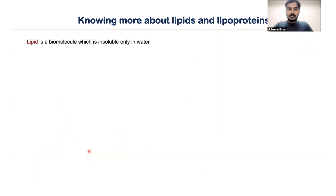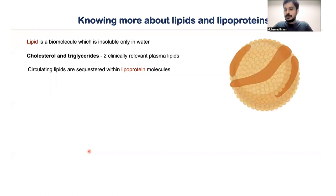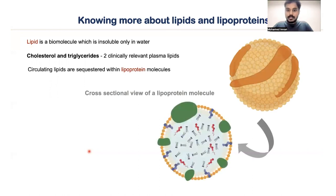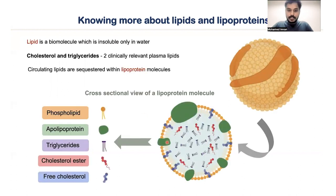What is a lipid? A lipid is a biomolecule which is insoluble in water. We are familiar with two plasma lipids: cholesterol and triglycerides, which are clinically very important. Since these lipids are insoluble in water but should travel through the bloodstream, they are sequestered within a transport vehicle known as a lipoprotein. This lipoprotein has a phospholipid monolayer surrounding it, and within that monolayer there are proteins known as apolipoproteins. Within this confined layer, triglycerides and cholesterol are confined together — this whole structure constitutes a lipoprotein.